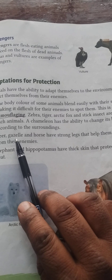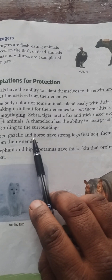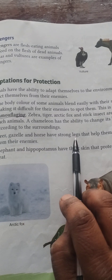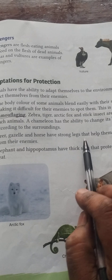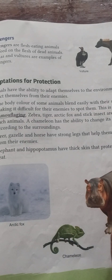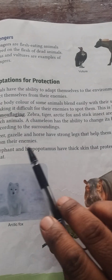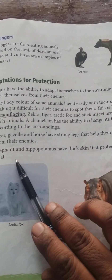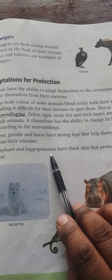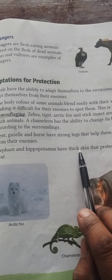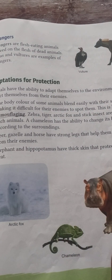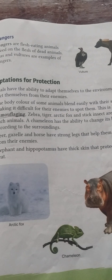Deer, gazelle and horse have strong legs that help them to run away from their enemies. Elephant and hippopotamus have thick skin that protects them from the heat.